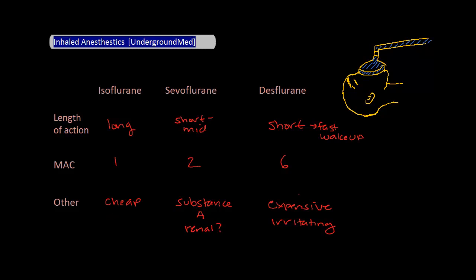Finally, the MAC of nitrous oxide, on the other hand, is 150, where you'd need 150% of the alveolar concentration of nitrous oxide to reach one MAC. Now, this implies that you cannot reach one MAC with nitrous unless you are in an airtight room.